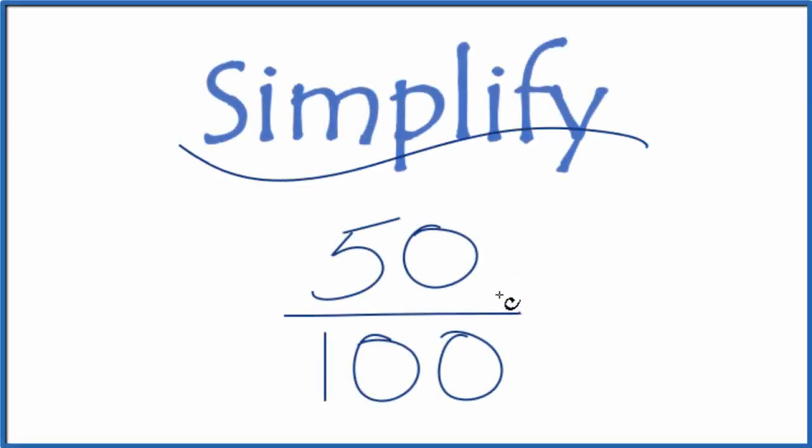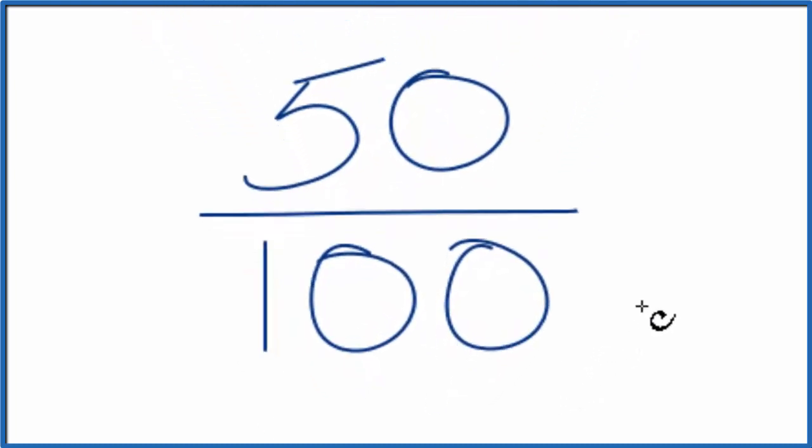If you're asked to simplify the fraction 50 over 100, here's how you do it. So what we're trying to do is we have our fraction 50 over 100. We want to have it reduced in a more simple form.